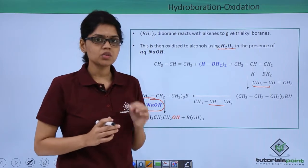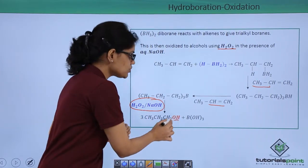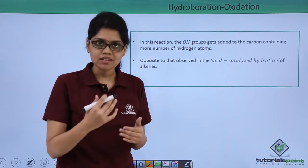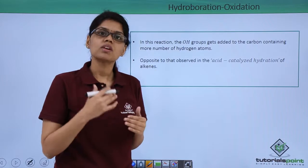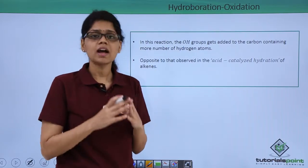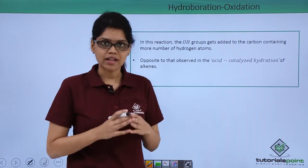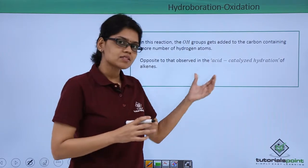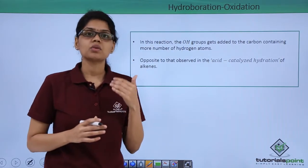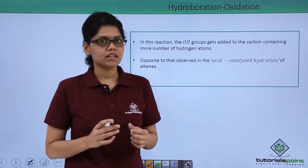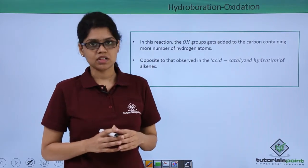Now, an important thing to note here is the position of OH group. As you can see in this reaction, OH group adds to that carbon atom which has more number of hydrogen atoms, as opposed to what we had observed in acid-catalyzed hydration of alkenes. We know that in acid-catalyzed hydration of alkenes, a Markovnikov addition takes place where the OH group attaches to that carbon atom which has less number of hydrogen atoms.